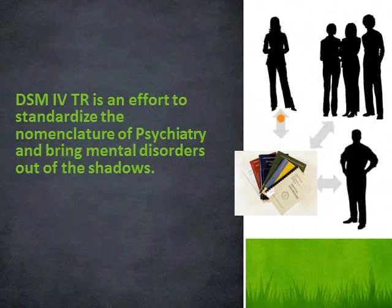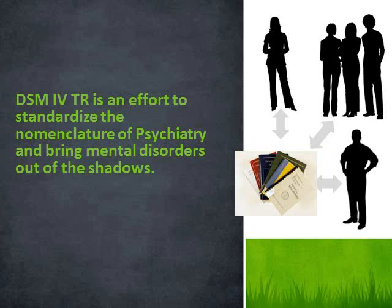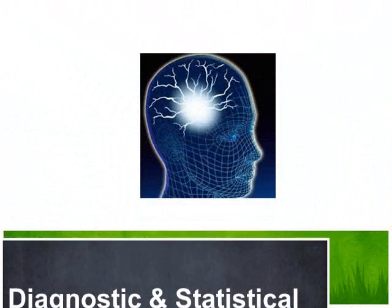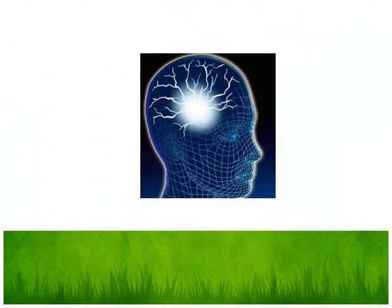The DSM-4TR is simply an effort to standardize the nomenclature of psychiatry and to bring mental disorders out of the shadows, making sure all disorders are confined to one standard definition. The DSM — the Diagnostic and Statistical Manual of Mental Disorders — provides that standard. It's like a dictionary of psychological diagnoses. If you're a psychology student, particularly a psych major, you may want to add the DSM-4TR to your library.